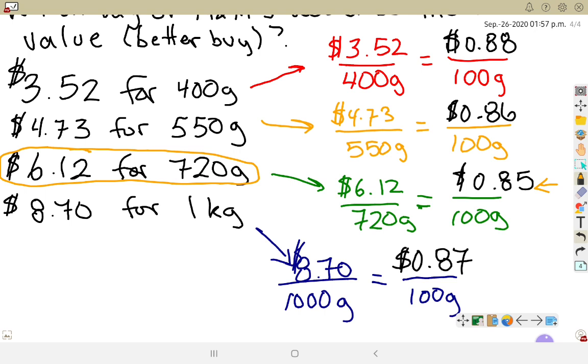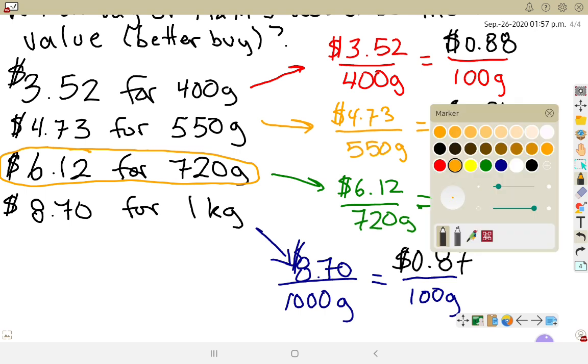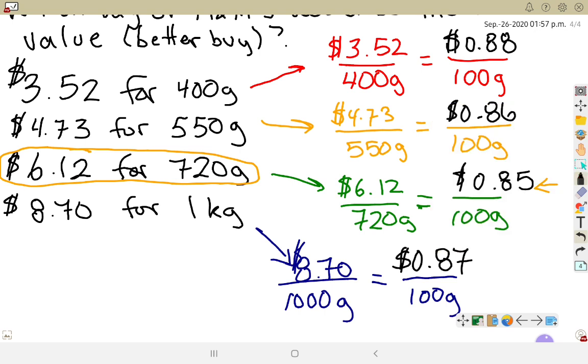We always want our dollars on top. If you don't put the dollars on top and you put them on the bottom and compare per dollar, the way you get your answer is going to change. Make sure you put your dollars up top. All I did was find the unit price for all four items and choose the lowest amount per 100 grams. That's how we compare and look for a better buy.